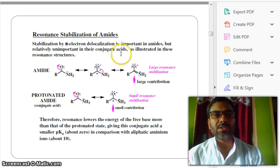Now, resonance stabilization of amides. Stabilization by pi electron delocalization is important in amides, but relatively unimportant in their conjugate acids, as illustrated in these resonance structures. This is amide, now you see, positive on carbon and negative on oxygen, and again you see this structure. Large resonance stabilization, large contribution.